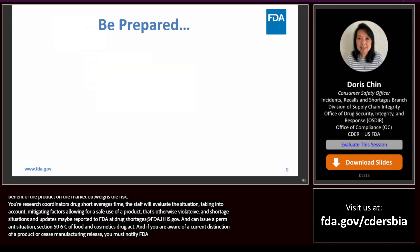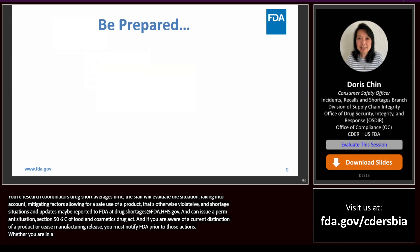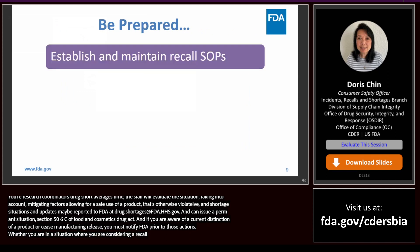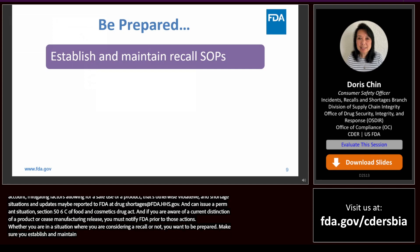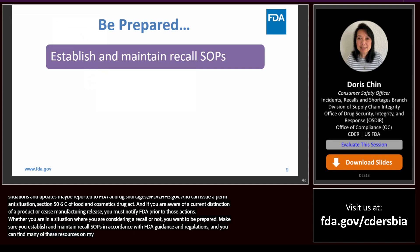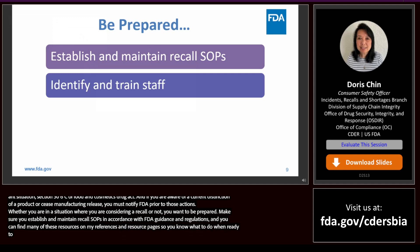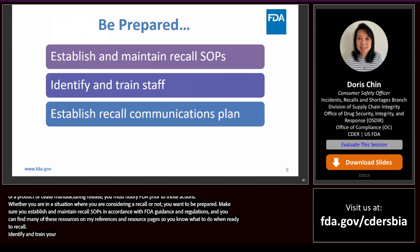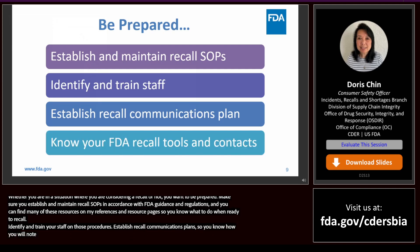Whether you're in a situation where you're considering a recall or not, you want to be prepared. Make sure that you establish and maintain recall SOPs in accordance with FDA guidance and regulations. You can find many of these resources on the references and resources pages. Identify and train your staff on those procedures, establish recall communication plans so you know how to notify your consignees, and know your FDA recall tools and contacts.